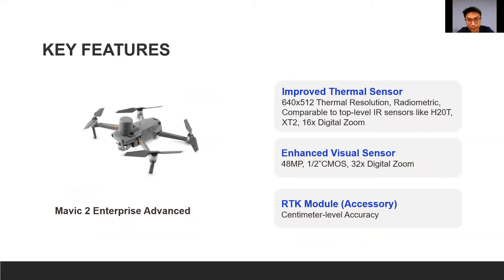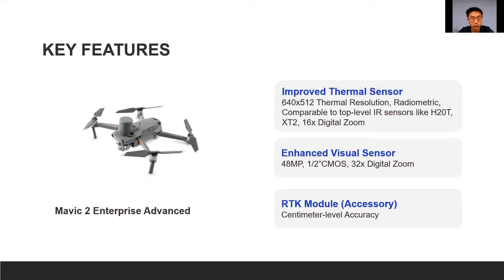The highlight of the M2EA is of course the thermal camera — 640 by 512 resolution, very similar to the H20T or XT2 thermal camera. The H20T and XT2 do still have a slight advantage because of their better focal length. The M2EA also features 16 times digital zoom on thermal, 48 megapixel RGB with 32 times zoom, and an add-on RTK module. When the RTK module is attached, there's no need for a ground-based station — you connect via internet on the Smart Controller, dialing into the SIRIM network to get correction data.